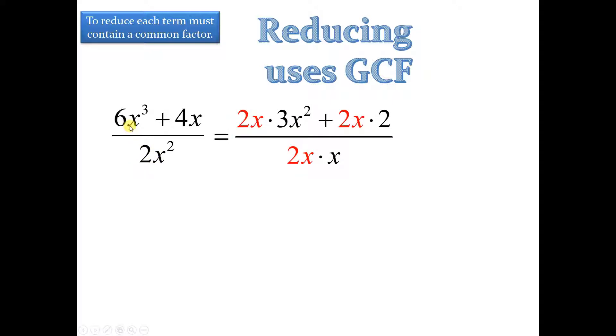Well, here they do share a common factor of 2x. So, we have 2x times 3x squared. That's, of course, 6x cubed. And we did the same treatment to 4x and 2x squared in the denominator. The 2x, that's what we're going to divide out. We're going to divide that out. What we're going to be left with is 3x squared plus 2 divided by x.